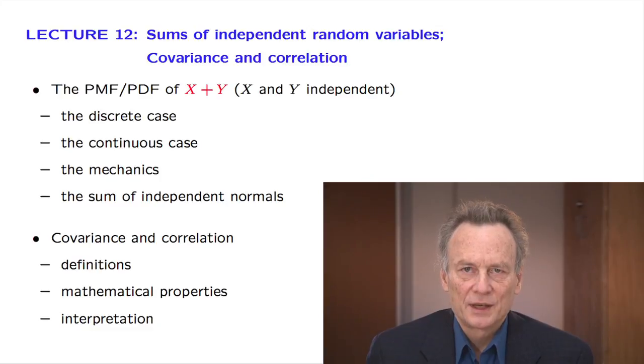As we will discuss, this formula also allows us to establish the very important fact that the sum of two independent normal random variables is normal.